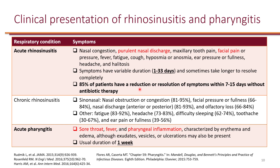When it comes to acute pharyngitis, there is a triad of sore throat, fever, and pharyngeal inflammation that are the hallmarks. The sore throat is worse with swallowing. Pharyngeal inflammation is characterized by erythema and edema, and it usually lasts for one week.